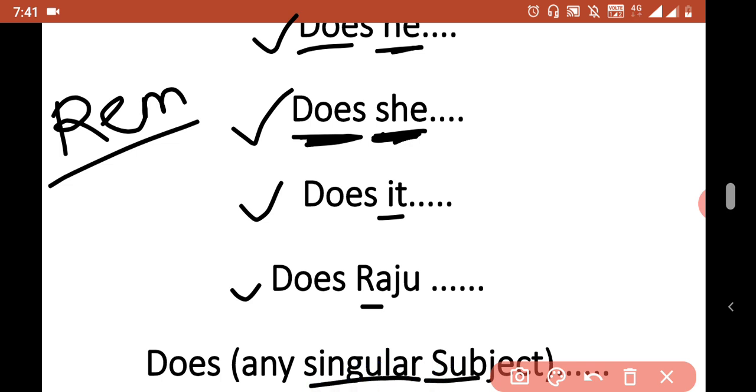Konthi singular subject asil, manje, ya thikani he, she, it, Raju, ha singular ahe, maktya purvika use karay chahe, does use karay chahe.